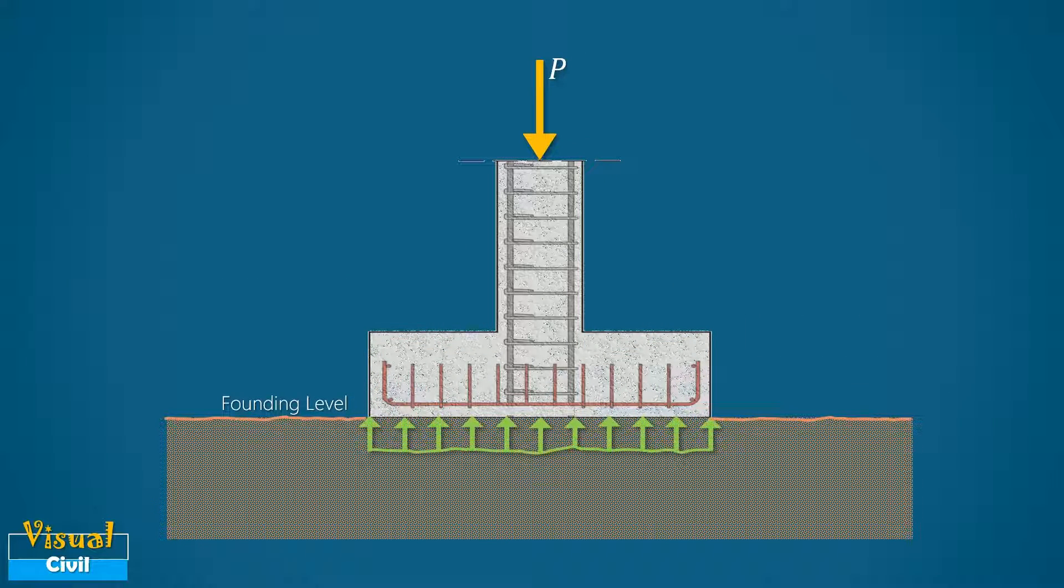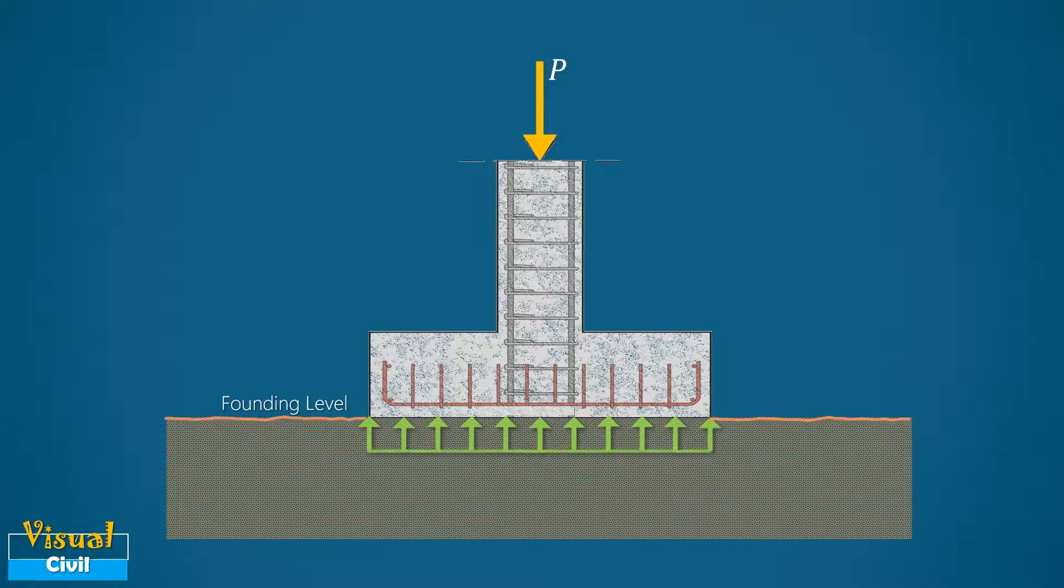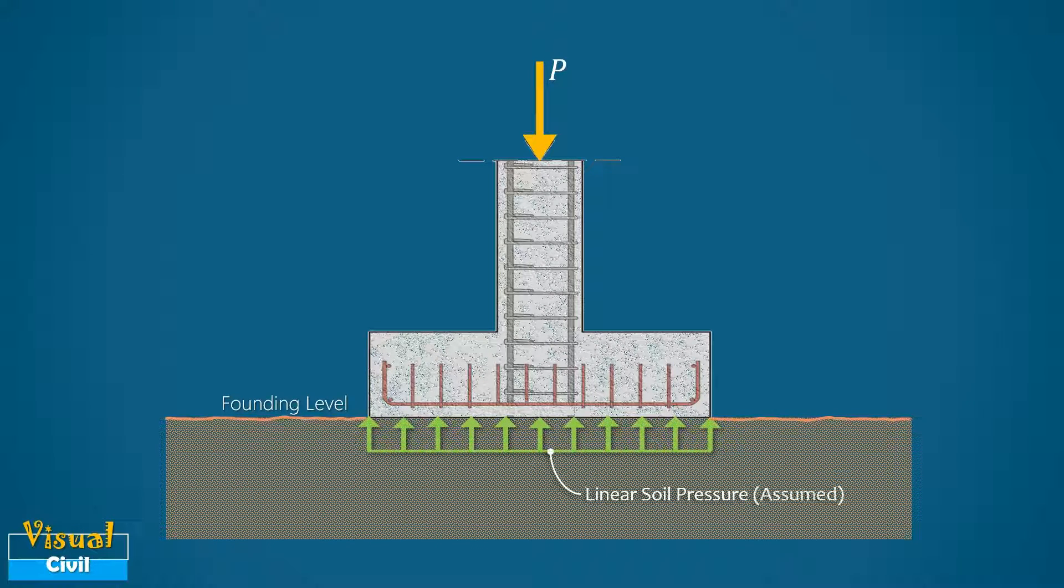The distribution of soil pressure acting at the base of the footing is generally non-uniform and depends on the rigidity of the footing as well as the properties of the soil. However, for convenience, a linear distribution of soil pressure is assumed in normal design practice.